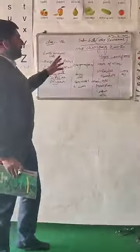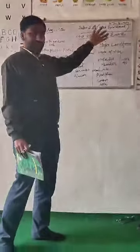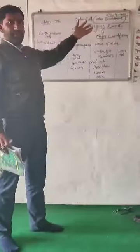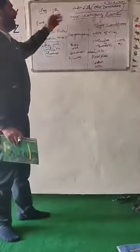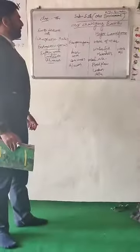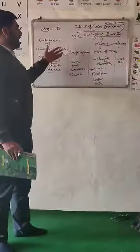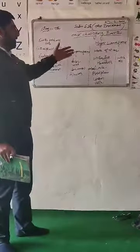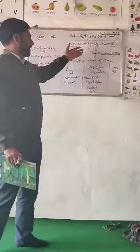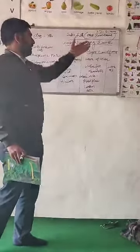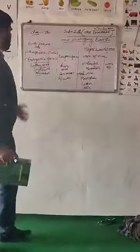We are reading our environmental geography book of the social science, and we are reading chapter number 3, that is 'Our Changing Earth'.